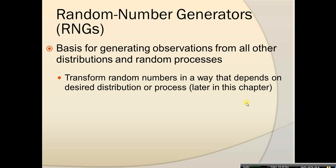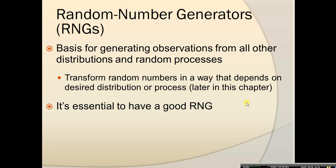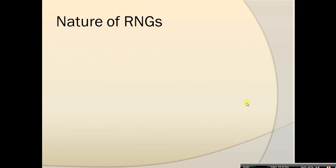The draws produced by this algorithm are called random numbers, and they're often the key in simulation. This random number generator is the basis for generating observations not just from the uniform 0-to-1 distribution, but from all other distributions and random processes. This is possible because we can transform random numbers depending on the desired distribution or process.